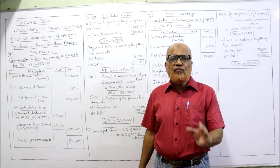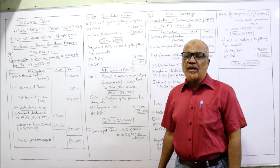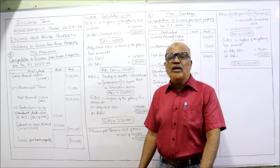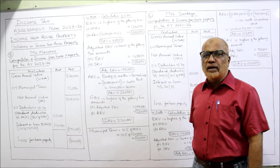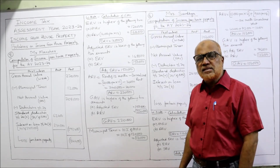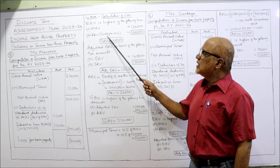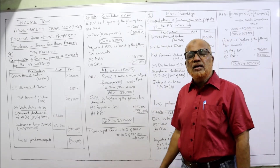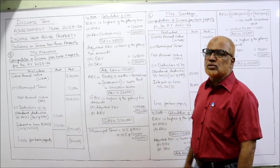The first step is calculating ERV — expected rental value — which is the higher of MRV and FRV. In this problem, MRV is 1,20,000 and fair rental value (rent of a similar house in the same locality) is 1,68,000 — calculated as 14,000 into 12. Whichever is higher is the ERV, so ERV is 1,68,000.